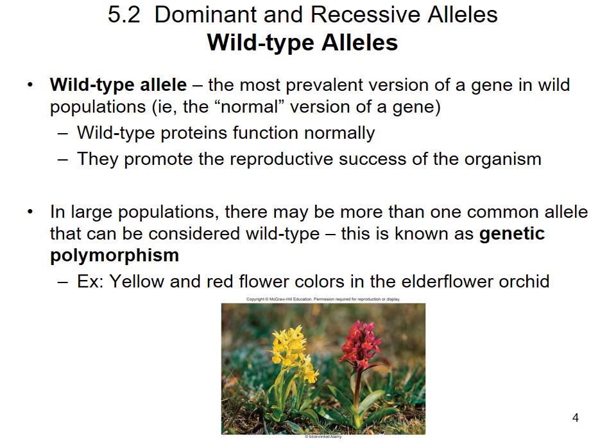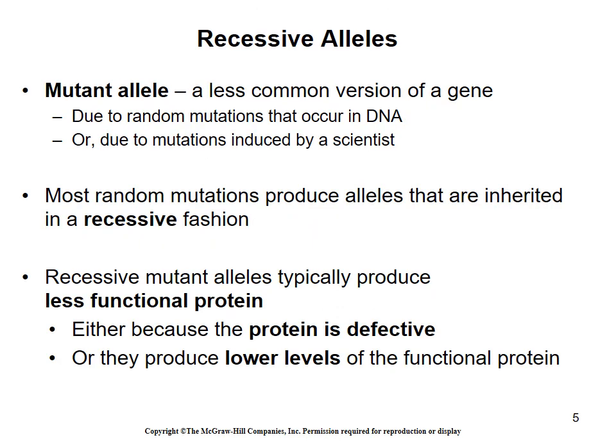This leads us to what we call genetic polymorphism — where you have multiple variations that can all be considered the normal version. For instance, in the elderflower orchid, it is quite common for flowers to be either yellow or red. Both are acceptable wild type alleles. When you have a random change in DNA and get a mutation, that can generate a mutant allele — a copy that is less common and we don't know exactly how it will contribute to the phenotype.